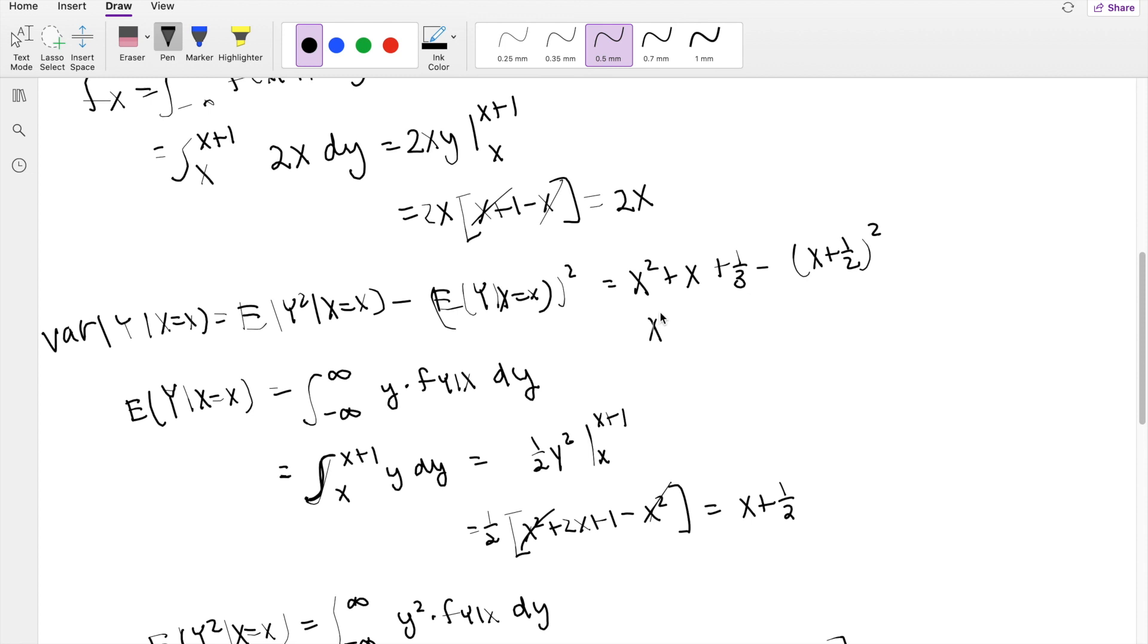So multiplying that sucker out, you get X² plus X plus 1/3 minus (X² plus X plus 1/4). All right, then you can distribute the negative sign, so then X²,